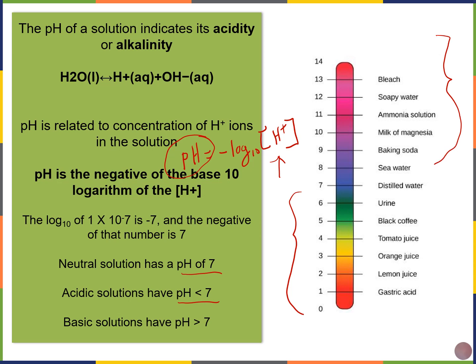What do you think the pH of human blood is? Water is neutral at 7. The average pH of blood is about 7.4, and there's a very narrow range of acceptable blood pH values, going from about 7.35 to 7.45. Any lower or higher than this can be deadly.